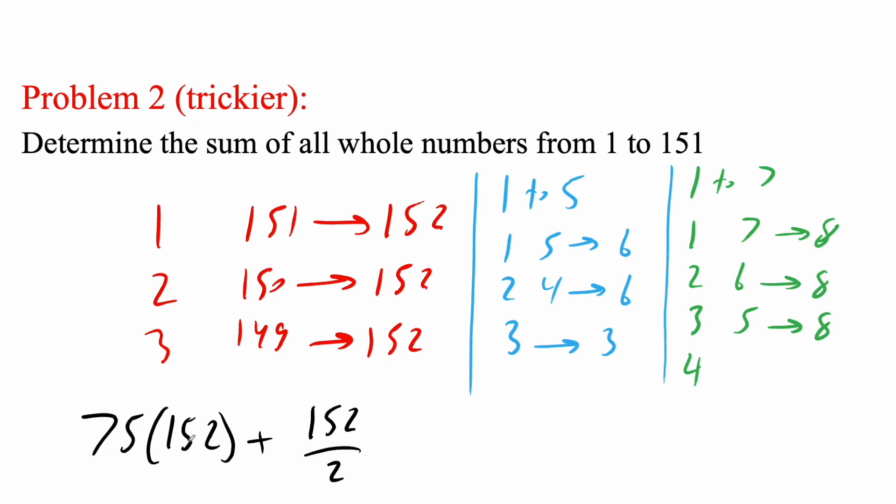And if we do the math, we'll get our final answer. So 75 times 152 plus 152 divided by 2. If you go ahead and use a calculator, you will get 11,476. So 11,476 as our final answer. And that's all we need to do for this problem.